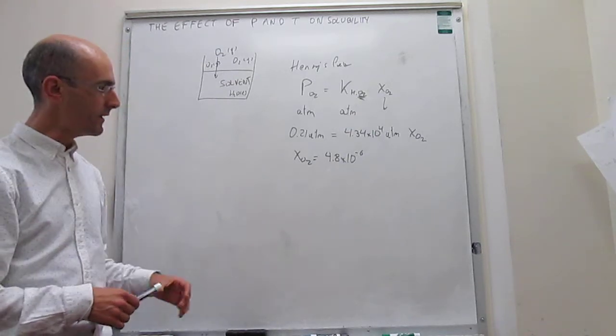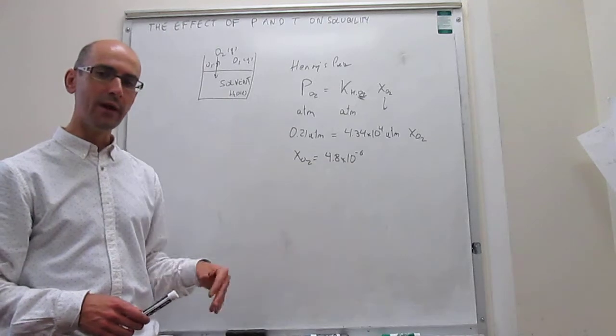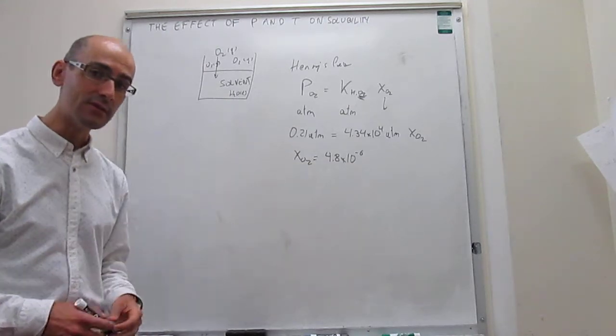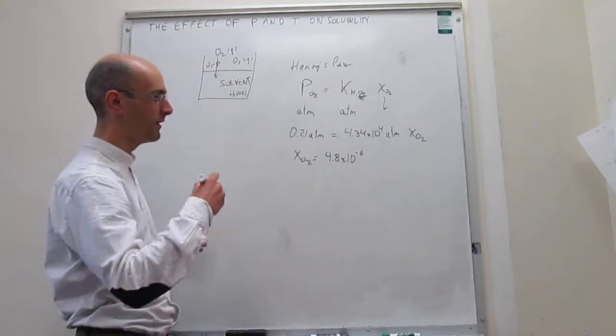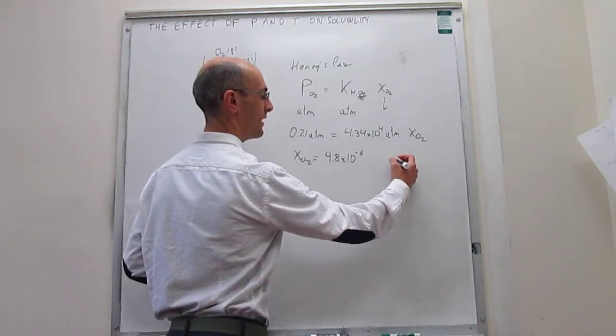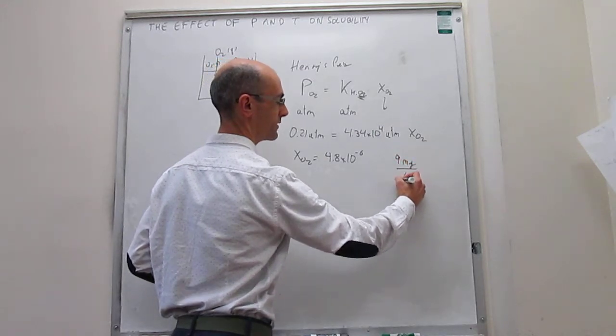But we can take this small mole fraction of O2 in water and calculate the mass concentration of oxygen in water. This turns out to be a value of about 9 milligrams per liter.